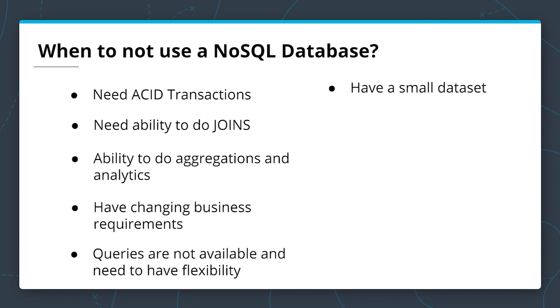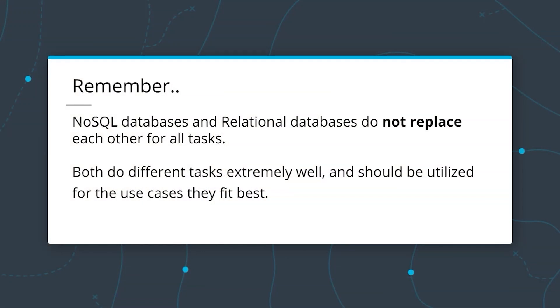All the reasons to not use a NoSQL database are the reasons to use a relational database. Over time, NoSQL databases are improving and adding features, but there are some features that are just not available by design. NoSQL databases are eventually consistent and do not have ACID transactions. Joins are not allowed, as full table scans are highly frowned on across hundreds or thousands of servers. Remember, NoSQL databases and relational databases do not replace each other for all tasks — both do different tasks extremely well and should be utilized for the use cases they fit best.